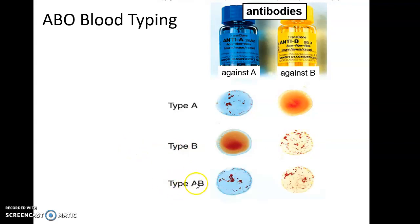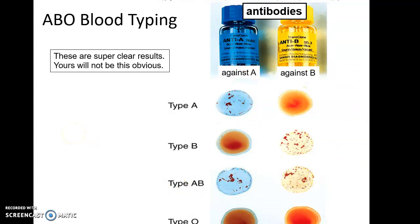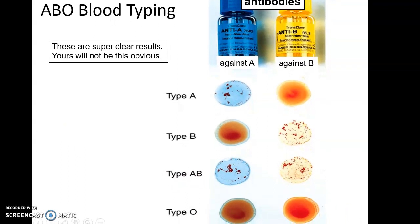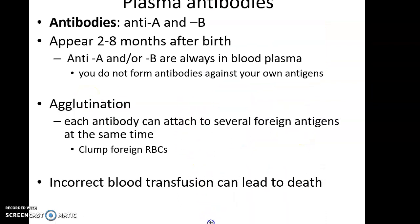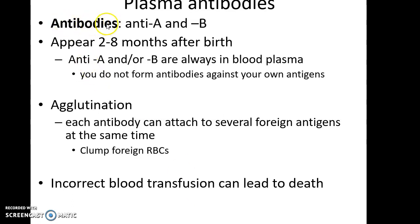If someone is type AB, they have both antigens, so they'll get a reaction with antibodies against A and a reaction with antibodies against B. If they are type O, they have neither antigen — O for nil, O for zero — so no response to anti-A antibodies and no response to anti-B antibodies. As a reminder, antibodies bind to a specific surface structure.